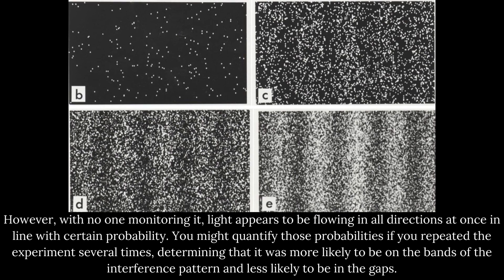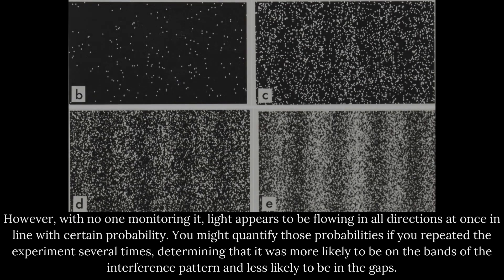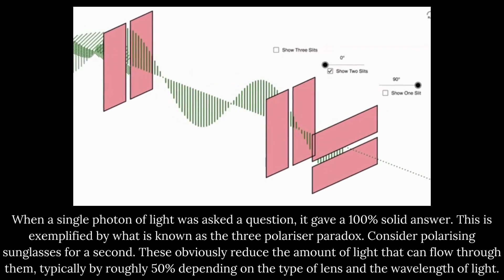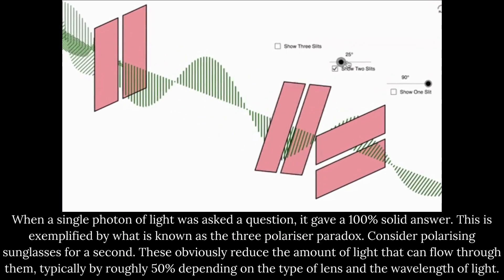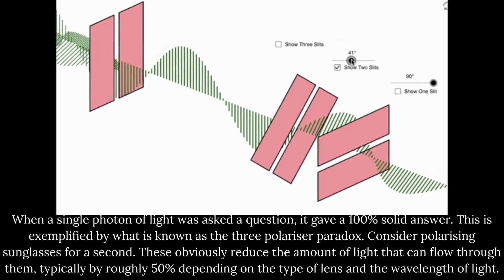You might quantify those probabilities if you repeated the experiment several times, determining that it was more likely to be on the bands of the interference pattern and less likely to be in the gaps. When a single photon of light was asked a question, it gave a 100% solid answer.